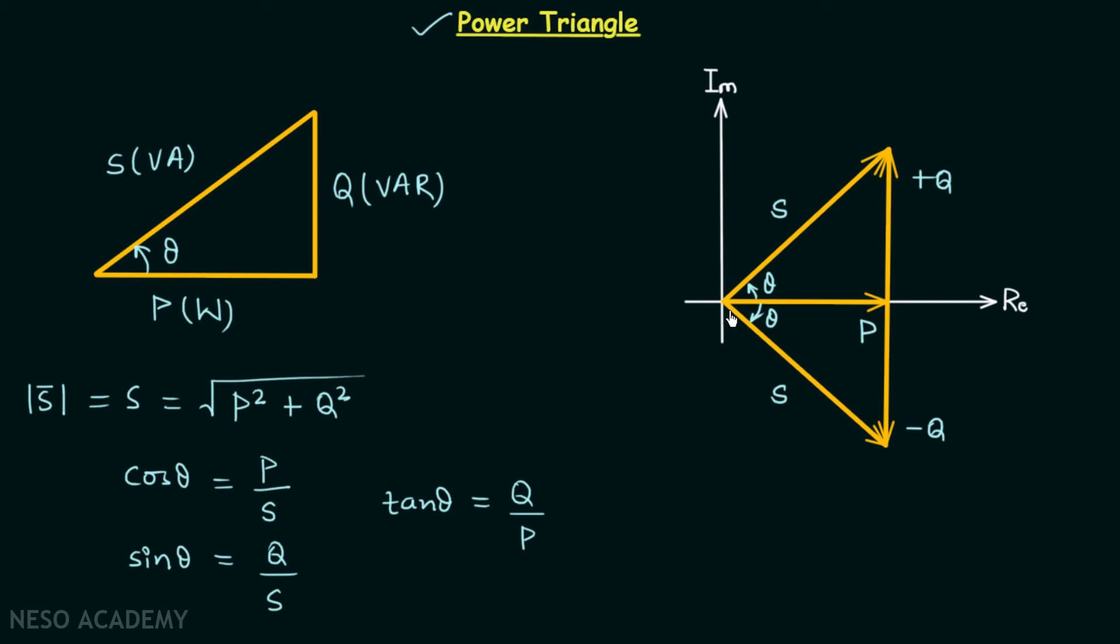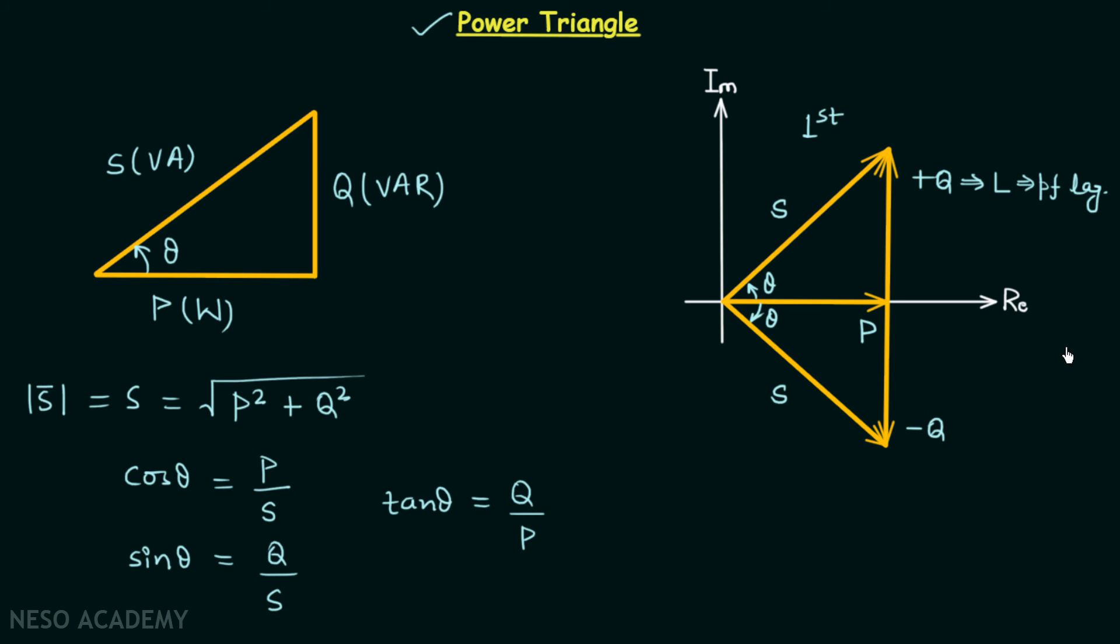The apparent power S can lie in the first quadrant. It can lie in the first quadrant and when it lies in the first quadrant you can see that the reactive power is positive and we know when reactive power is positive. This means the load is going to have an inductive nature and the power factor will lag. The power factor will lag.